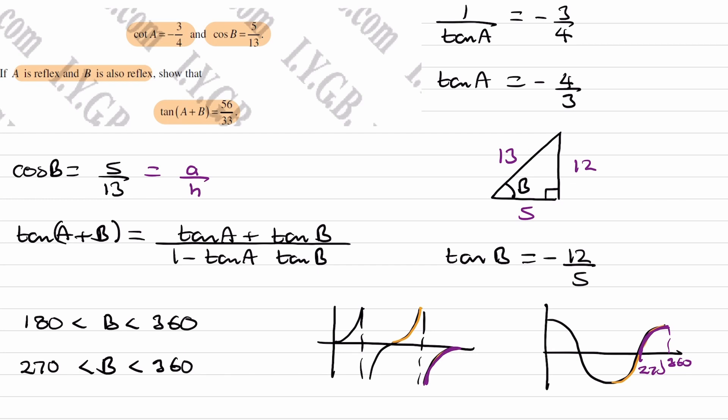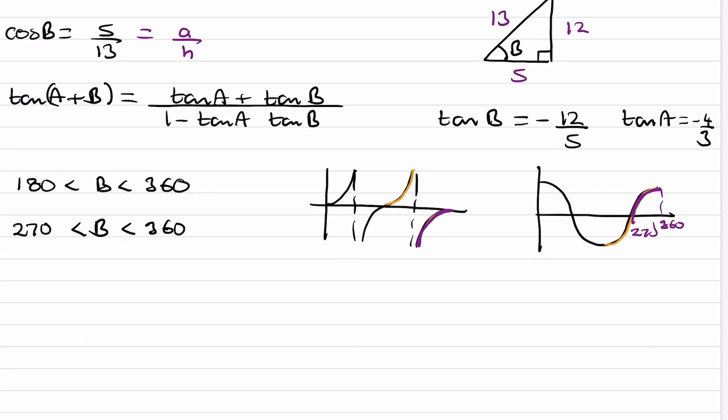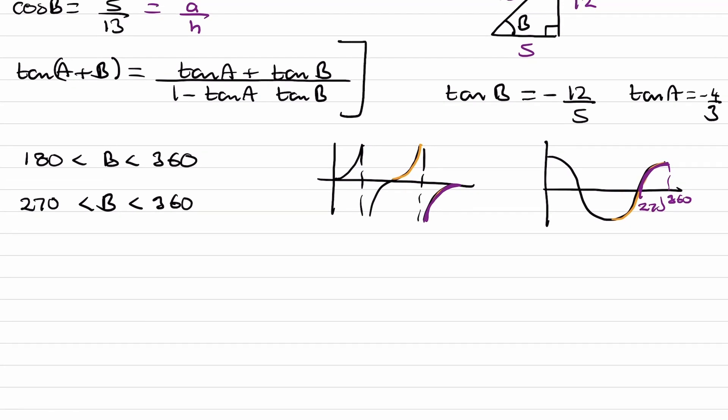Alright, so tan B is minus 12 over 5. Tan A from above is minus 4 over 3. Now we can put both of those two things into this.